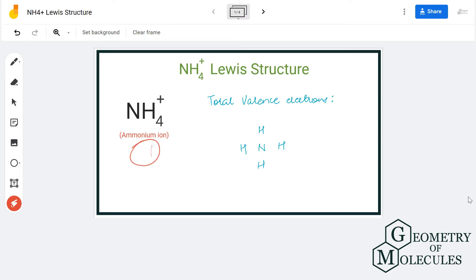To know the Lewis structure of this ion, we will first look at its total number of valence electrons. Nitrogen here has five valence electrons in its outer shell. Each hydrogen atom has one valence electron.